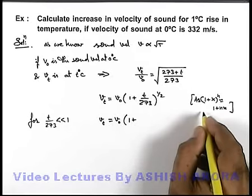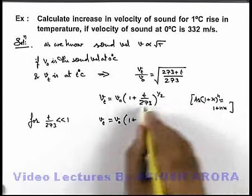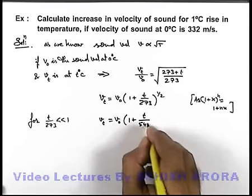For using binomial applications for x very very less than 1, it'll be t by 546.